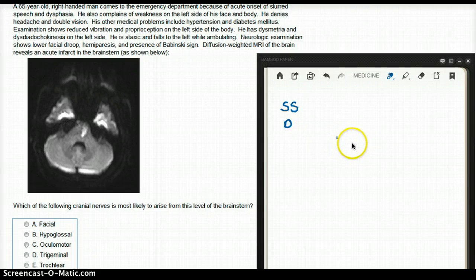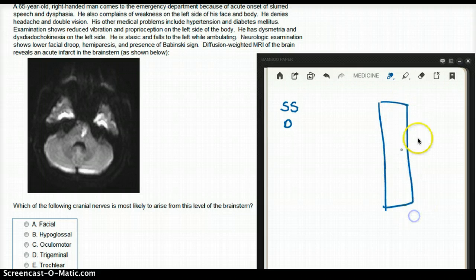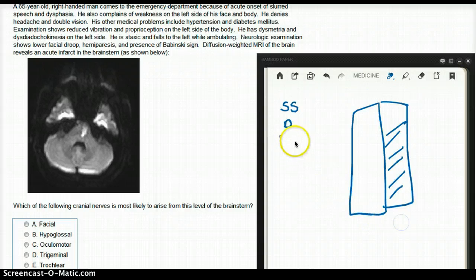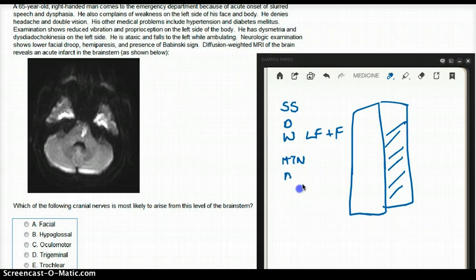He also complains of weakness of the left side of the face and body. The right side is okay. He denies headache and double vision. His other medical problems include hypertension and diabetes mellitus.